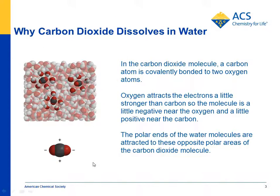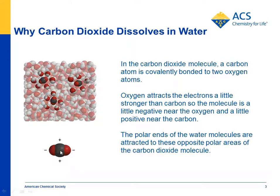Now, why is it that carbon dioxide can be dissolved in water at all? Carbon dioxide, CO2, is made out of a carbon and two oxygens, and the covalent bonds between the carbon and the oxygen are such that the electrons spend a little bit more time near the oxygen than they do near the carbon. So it makes the oxygen part of the molecule a little bit negative, and the carbon part a little bit positive. The polar parts of water molecules are attracted to these polar parts of the carbon dioxide molecule, and they can keep it in solution.